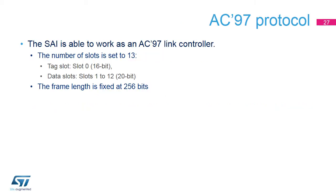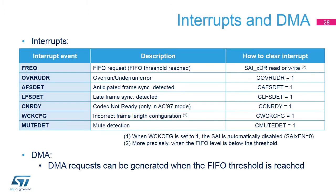The SAI is able to work as an AC97 link controller. When this protocol is used, the frame length, the slot number, and slot length are set by the hardware. Several events can be enabled in order to generate interrupts. The WCKCFG event can be used to inform the user that the frame length of the SAI has been improperly programmed. This feature only makes sense in master mode.